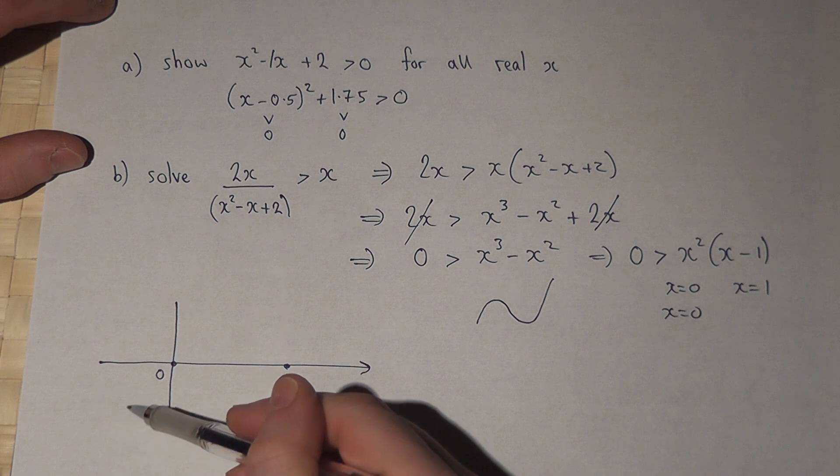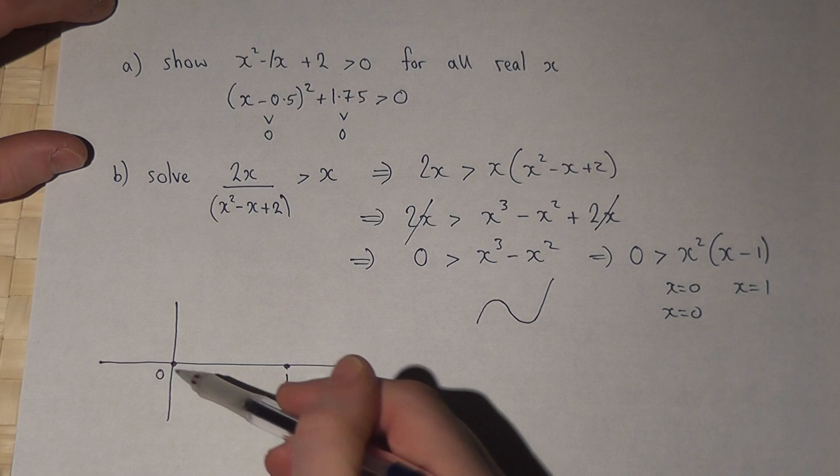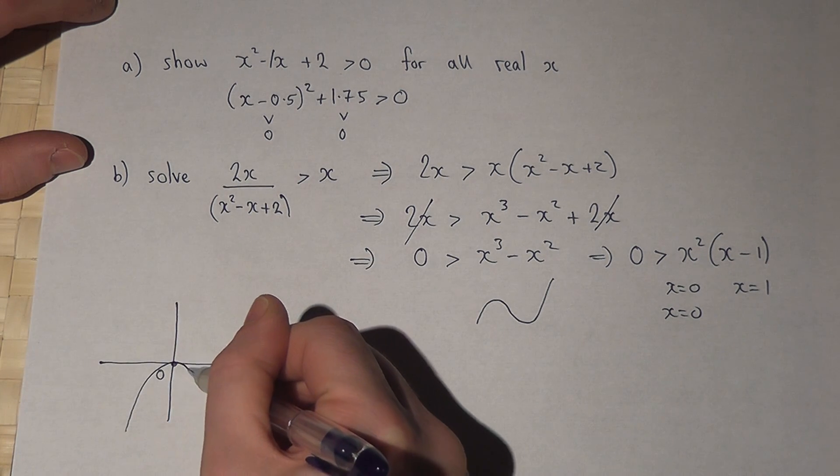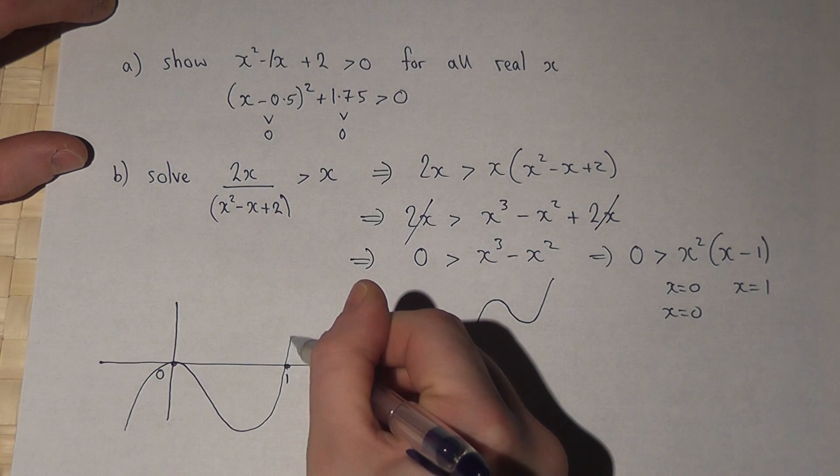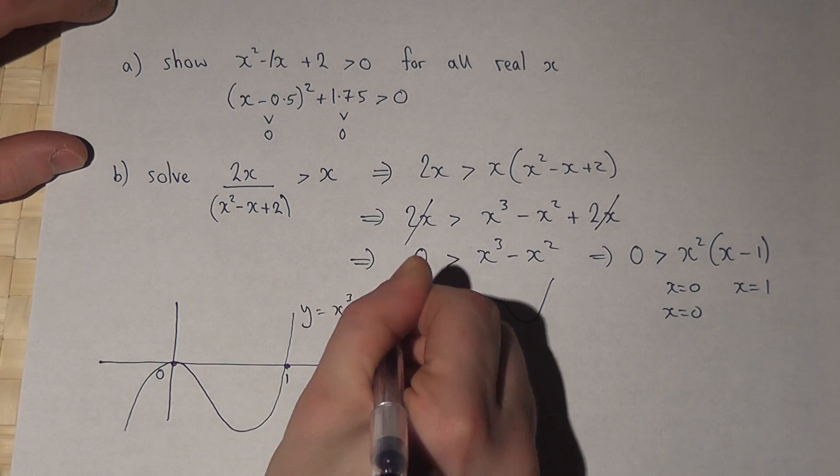So the graph will come up and will reflect off the axis at x equals 0, then come back up again at x equals 1. So this, therefore, is a sketch of the graph y equals x cubed minus x squared.